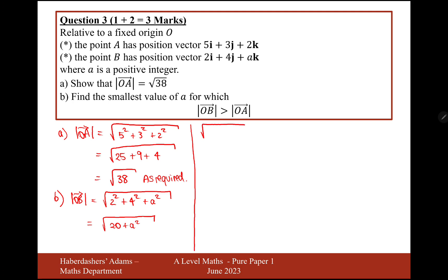Let's set up an inequality now. So we want 20 + a², that's |OB|, to be bigger than the square root of 38. Now on both sides of the inequality here, we have positive values, so we can square both sides without worrying which way around our inequality symbol should point.